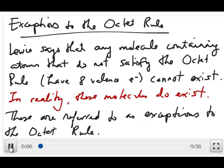This video will discuss some of the exceptions to the octet rule. According to the Lewis model, in order to represent a molecule, each atom in the molecule has to satisfy the octet rule, which means it has to have 8 valence electrons, or if it's a hydrogen, it has 2 valence electrons. Anything that doesn't satisfy the octet rule means those molecules cannot exist.